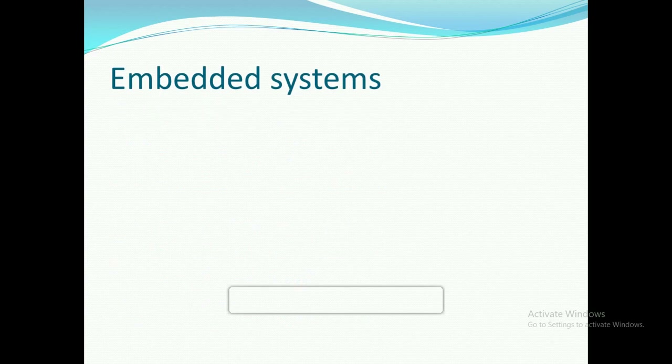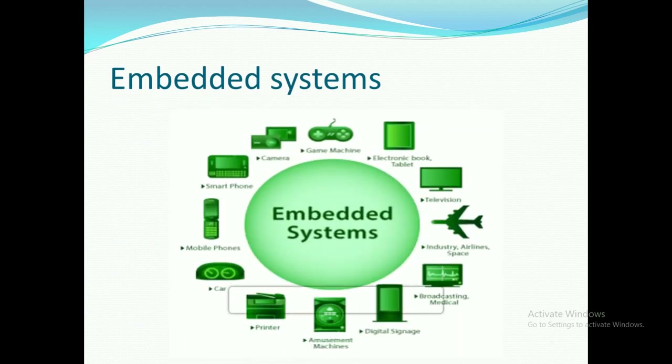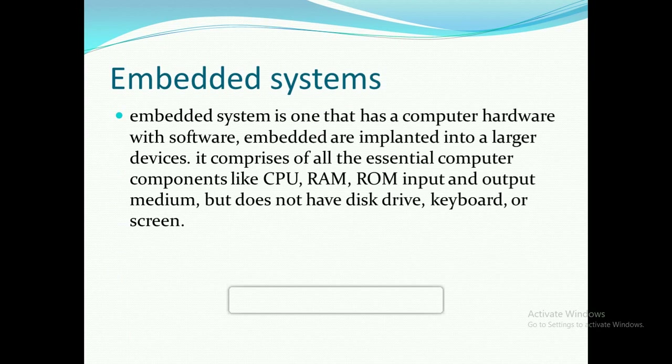Another example of microcomputers is embedded systems. Examples of embedded systems include cameras, game machines, electronic books, tablets, televisions, industrial equipment, airlines, space, broadcasting, medical devices, digital signage, amusement machines, printers, cars, mobile phones, and smartphones. An embedded system is one that has computer hardware with software implanted into a larger device. It comprises all essential computer components like CPU, RAM, and ROM, as well as input and output mediums, but does not have a disk drive, keyboard, or screen.